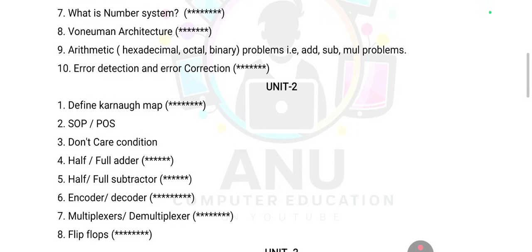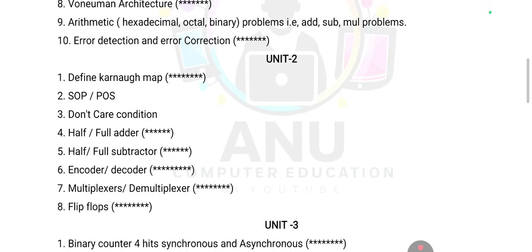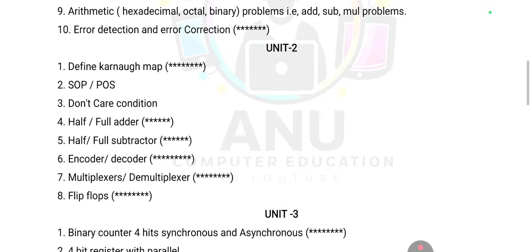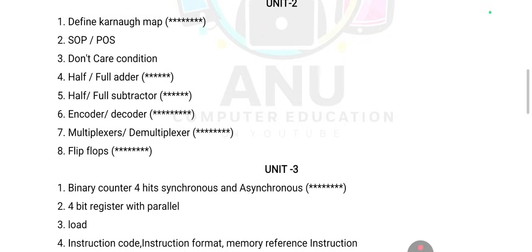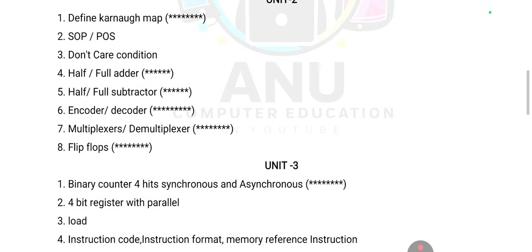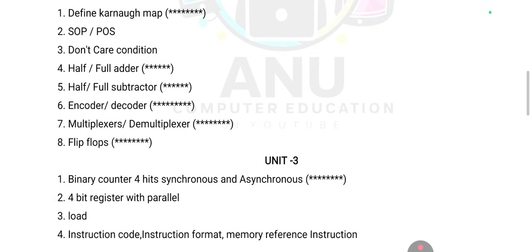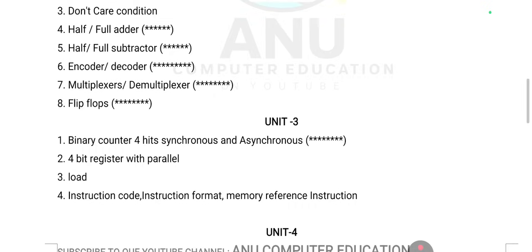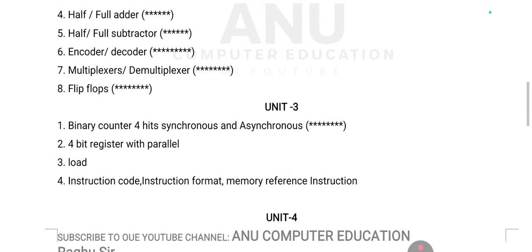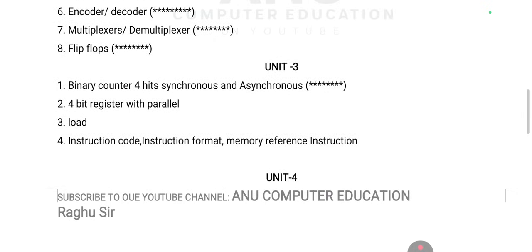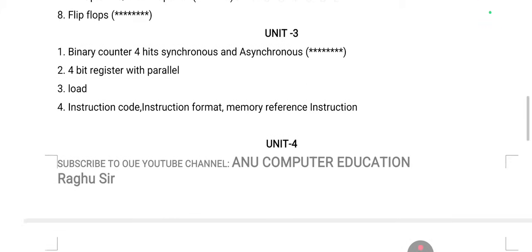Multiplexer or demultiplexer — you can expect one question there. Flip-flops are also very important. Binary counter: four bits, both synchronous and asynchronous. Four-bit register with parallel load, and instruction codes — these are all very important questions from unit number three.